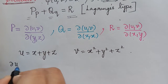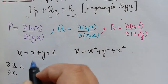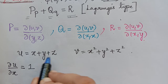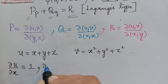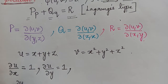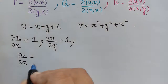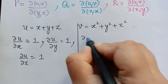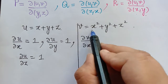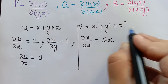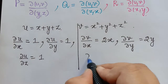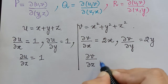In order to find P, Q, and R, we differentiate u and v partially with respect to x, y, and z. We find that ∂u/∂x = 1, ∂u/∂y = 1, and ∂u/∂z = 1, since y and z are treated as constants. For v, we get ∂v/∂x = 2x, ∂v/∂y = 2y, and ∂v/∂z = 2z.